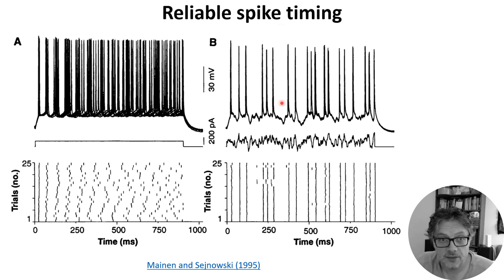On the other hand, if you inject a fluctuating input current, that's this current here, you'll see that both the membrane potentials and the spikes tend to occur at the same times. So the vertical lines on this plot are basically showing you that on every repeat, the spike is happening at more or less the same time.